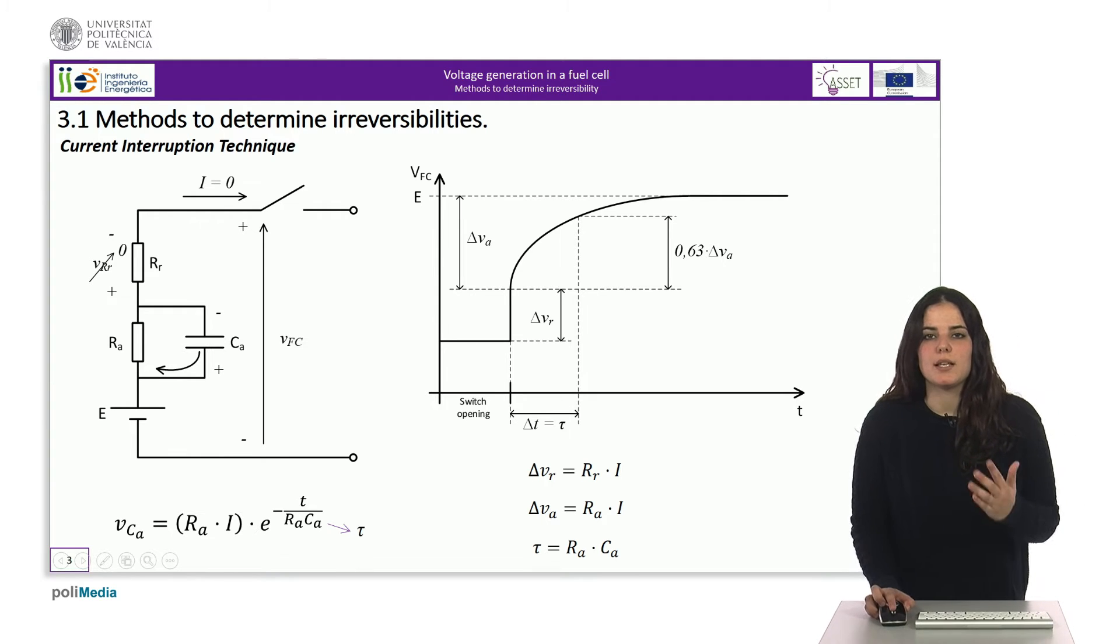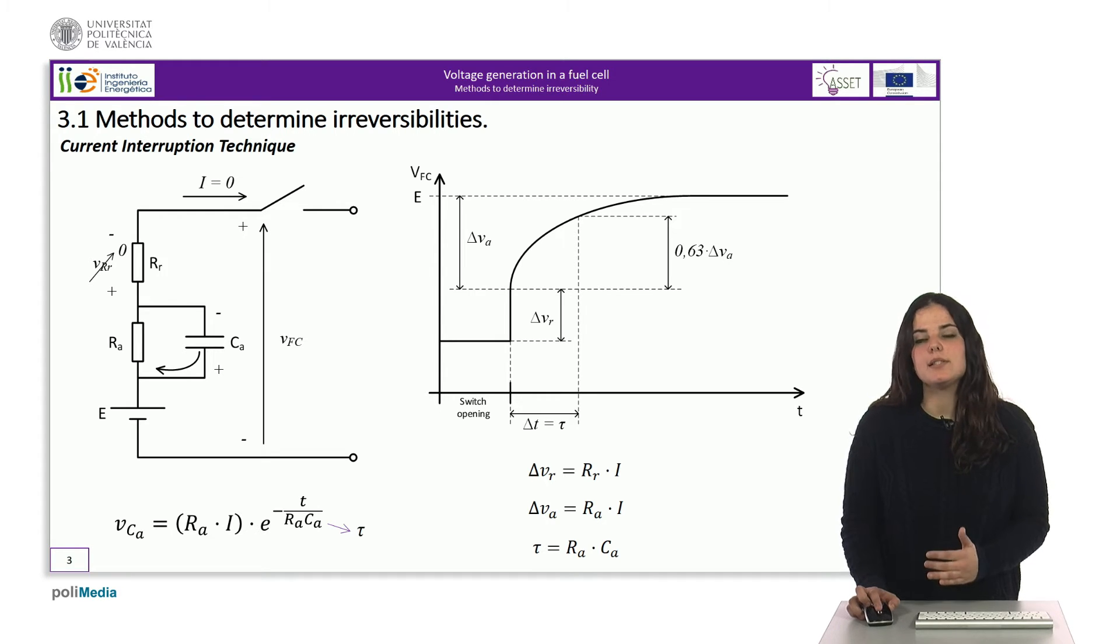However, the voltage in the capacitor that models the effect of the double charging layer doesn't disappear instantaneously because it must be discharged on the model's resistor R A. The initial value of the capacitor voltage is precisely the voltage drop that occurred at the R A resistance when the current was circulating. Therefore, the voltage increase from the moment the voltage R R disappears until it reaches the stable current of the final voltage allows calculating the value of the resistance R A in the same way that we have calculated R R.